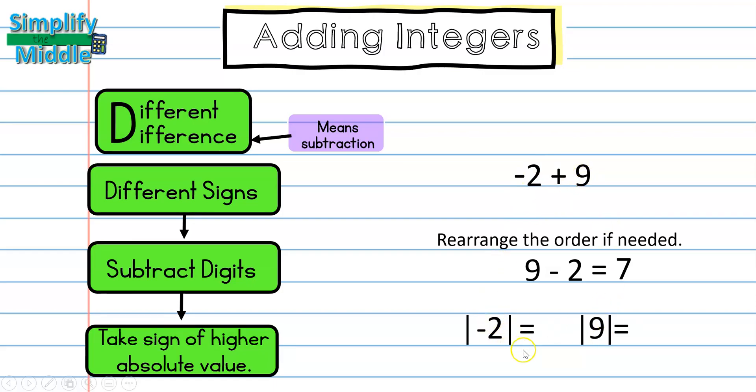The absolute value of negative 2 is 2 and the absolute value of 9 is 9. So, because 9 has a higher absolute value and in the problem it's a positive number, my answer will be positive as well. So, negative 2 plus 9 is equal to positive 7.